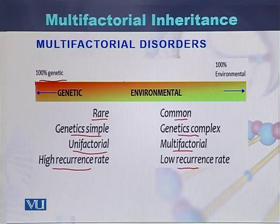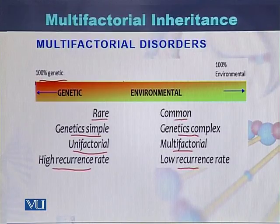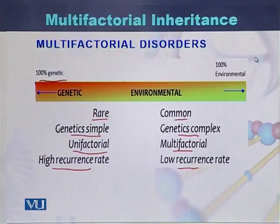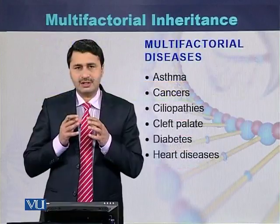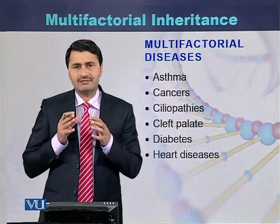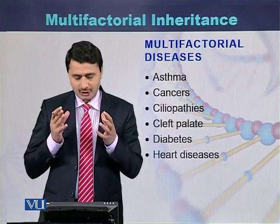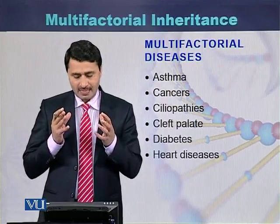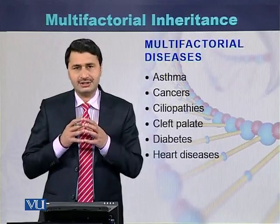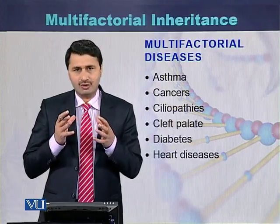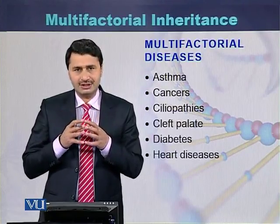So a joint venture between the function of both environment and genetics — those diseases are called multifactorial disorders or multifactorial diseases. The examples of the most common multifactorial diseases are asthma, cancers, coeliopathies, cleft palate, diabetes, and heart diseases. These are some of the most common multifactorial diseases.